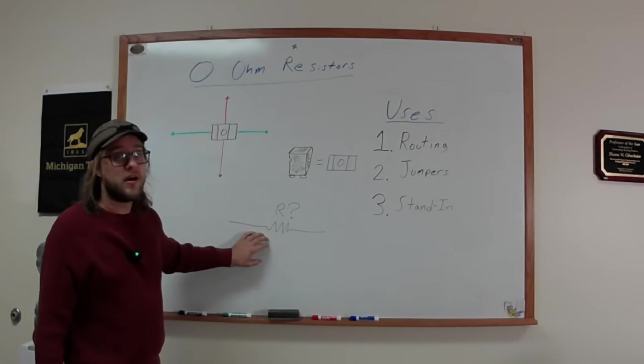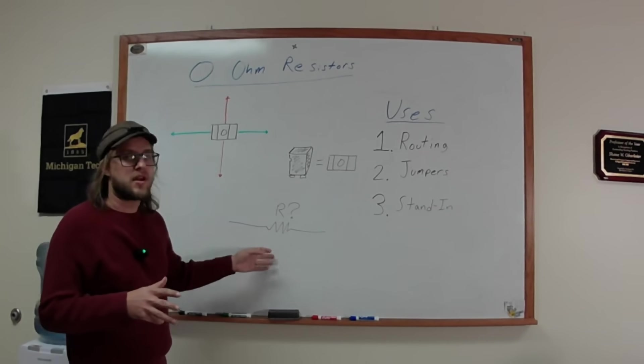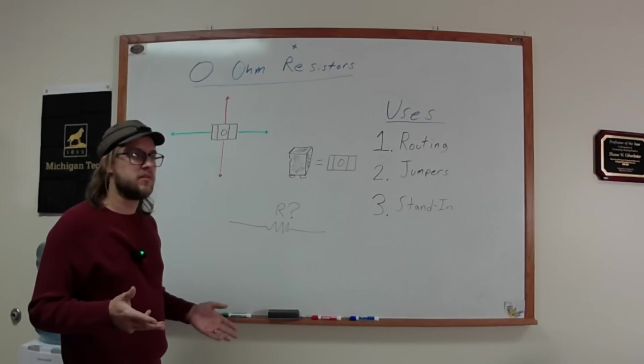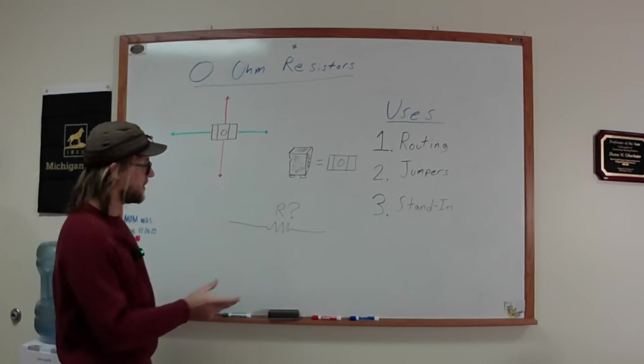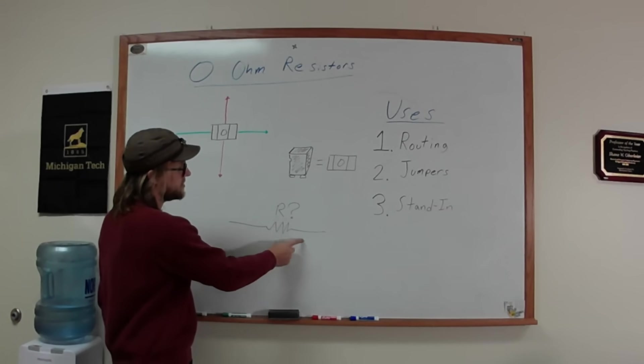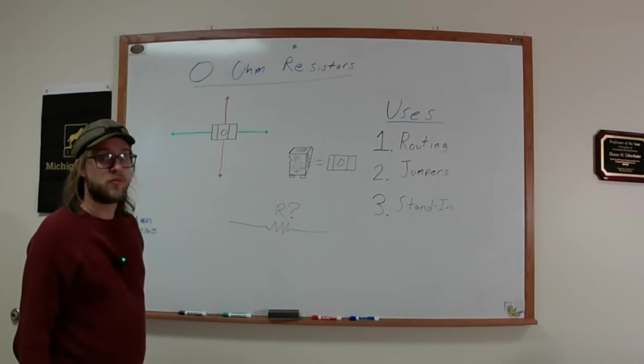And so say you tried a five ohm resistor and it wasn't getting what you needed. You tried a three ohm resistor, still wasn't what you needed. And then you put a zero ohm resistor in there and it works. I still need something to bridge this gap because it exists on my circuit board and a zero ohm resistor can do that.